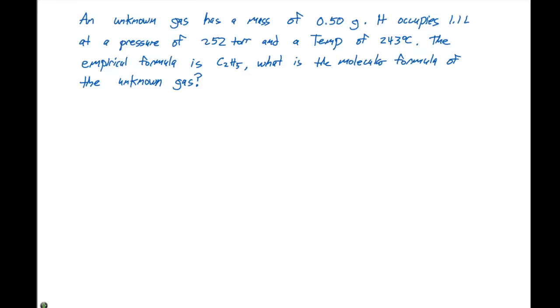Our next example problem asks the following. An unknown gas has a mass of 0.50 grams. It occupies 1.5 liters at a pressure of 252 torr and a temperature of 243°C. The empirical formula is C2H5. What is the molecular formula of the unknown gas?